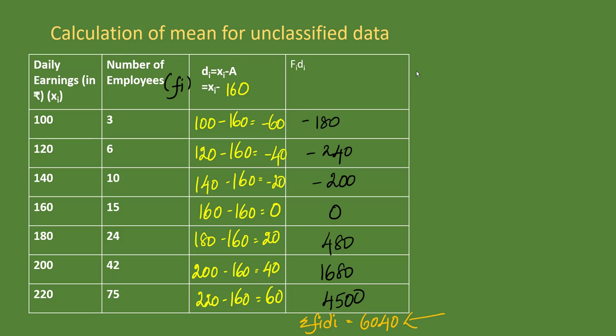The next step is to calculate the mean. How do we calculate the mean? Since we have taken assumed mean, we are taking that value: summation of f_i d_i divided by summation of f_i. The assumed mean is 160.